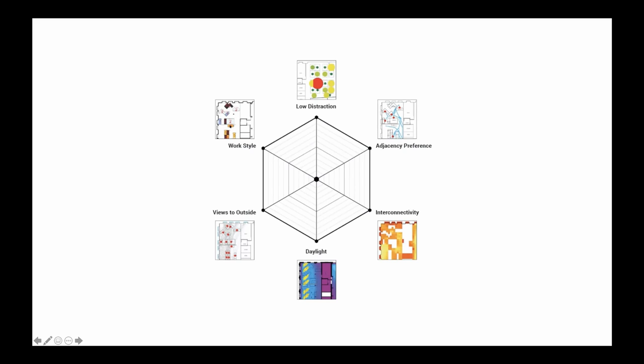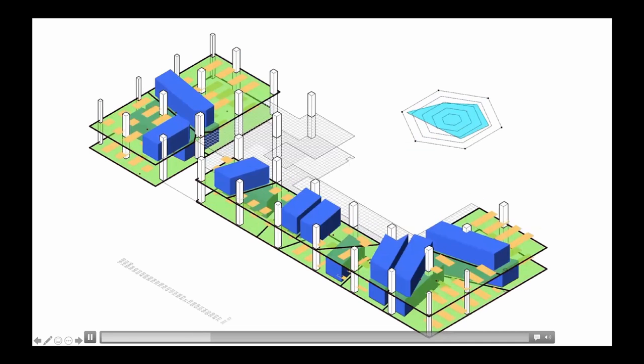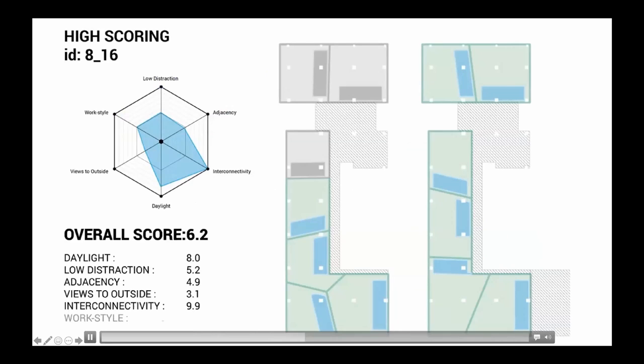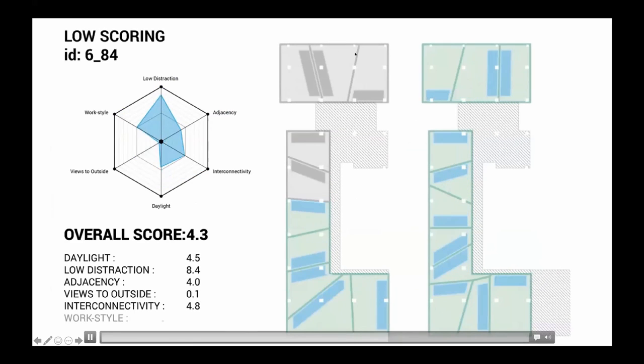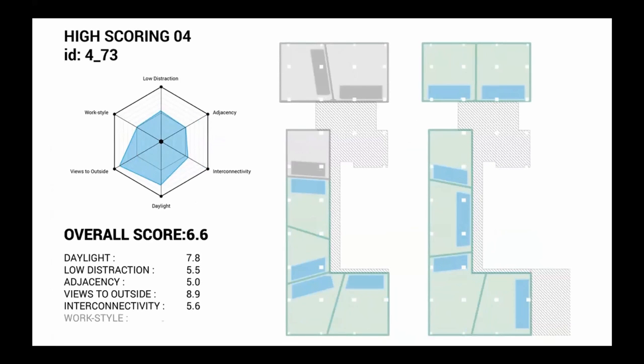The algorithm used a Voronoi pattern based on neighborhood areas to split the space into neighborhoods, which were then allocated amenity blocks and desks, all scored on the six metrics. The geometric system had the floor constraints and columns, a central spine with neighborhood points adjustable by input parameters, the Voronoi pattern subdividing zones based on those centers, and then amenity and desk allocation — a fairly simple geometric system capable of generating thousands of design options.